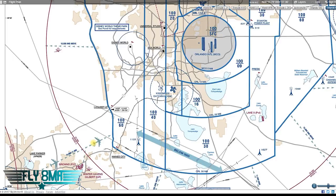You'll notice that route kind of disappears — what's happening is at that point they're getting vectors to the final approach course. That's why they want you below 3,000 feet here, so they can vector airliners down to 4,000 feet and lower as they get on the final approach course into Orlando International for a nice stable approach.